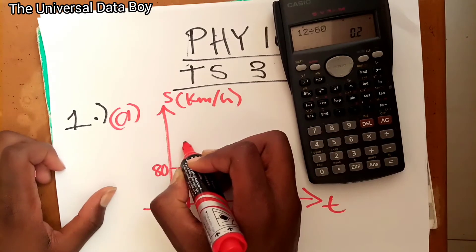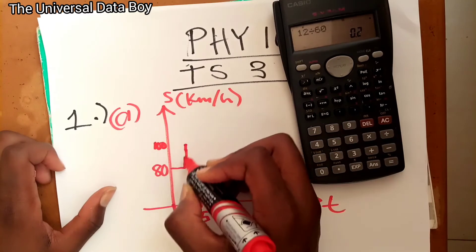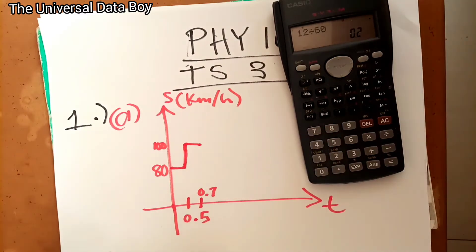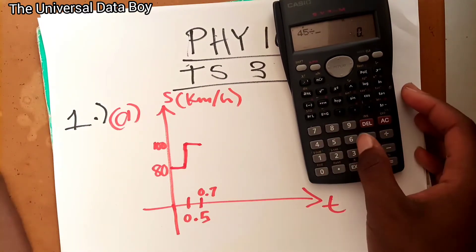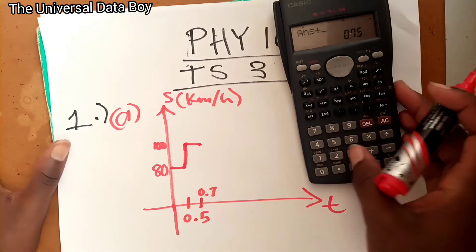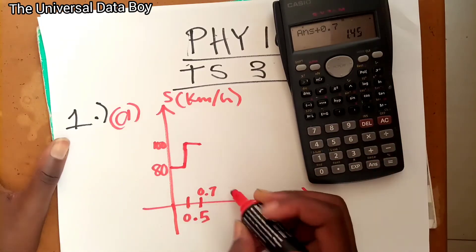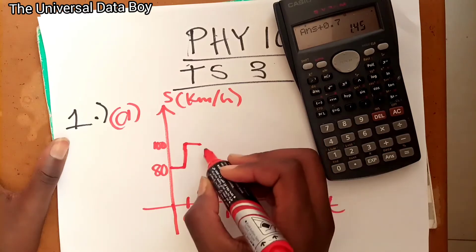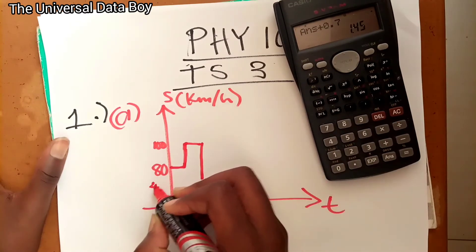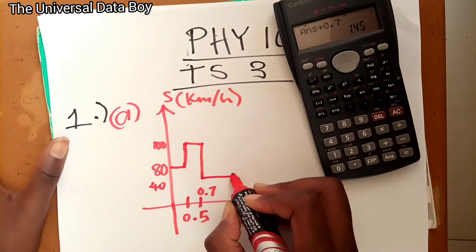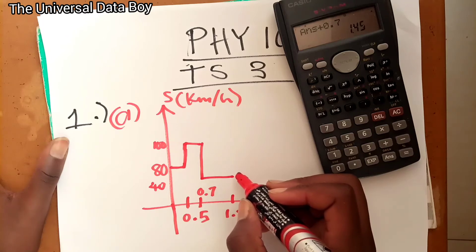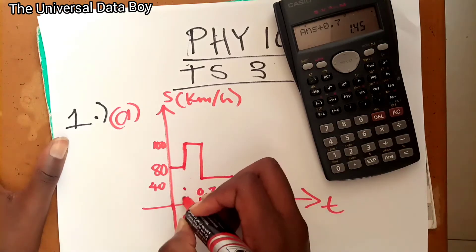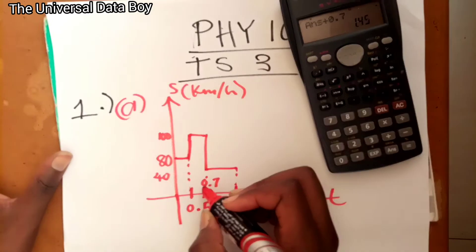At that point she drove at 100 km/h for 0.2 hours. Then for 45 minutes: 45 divided by 60 gives 0.75 hours. Adding that to 0.7 gives 1.45 on the time axis. She then drove at 40 km/h for those 0.75 hours. After that she spent 15 minutes eating lunch and buying gas, so her speed dropped to zero.